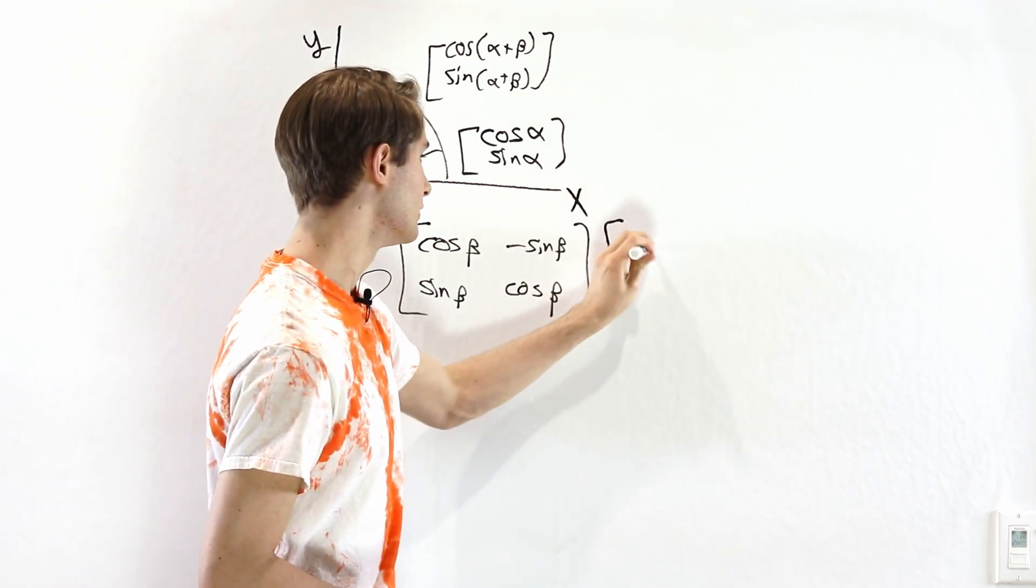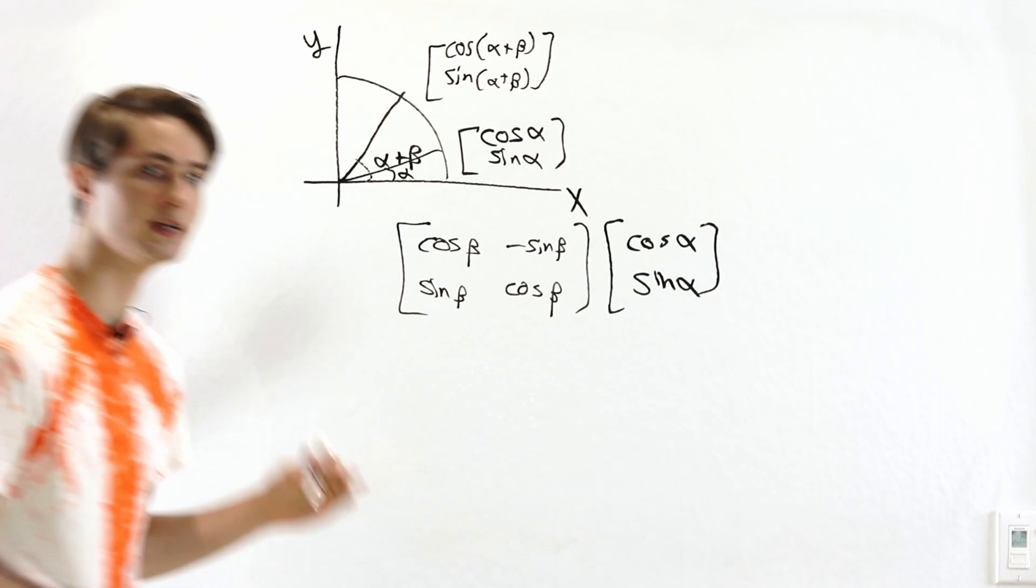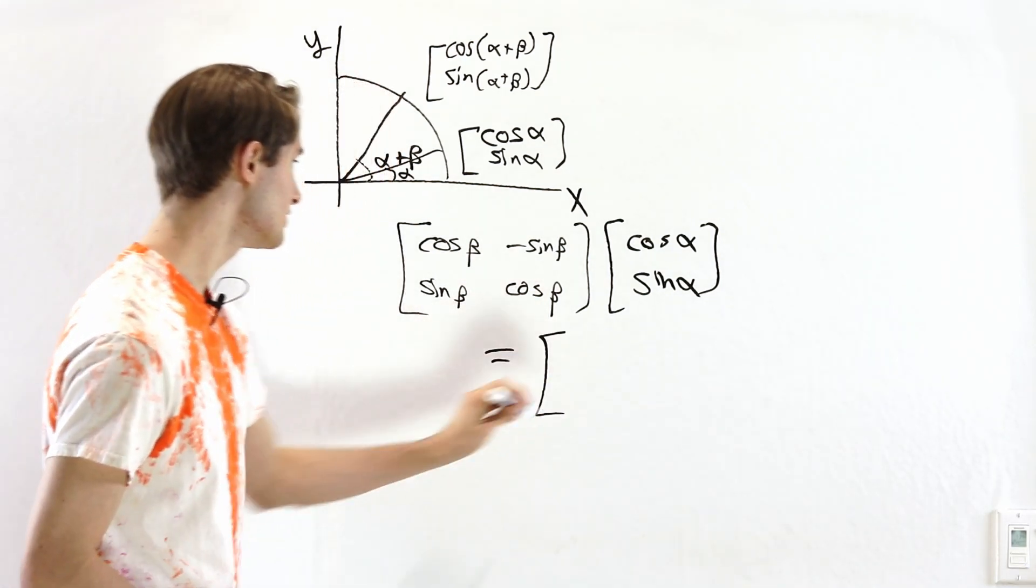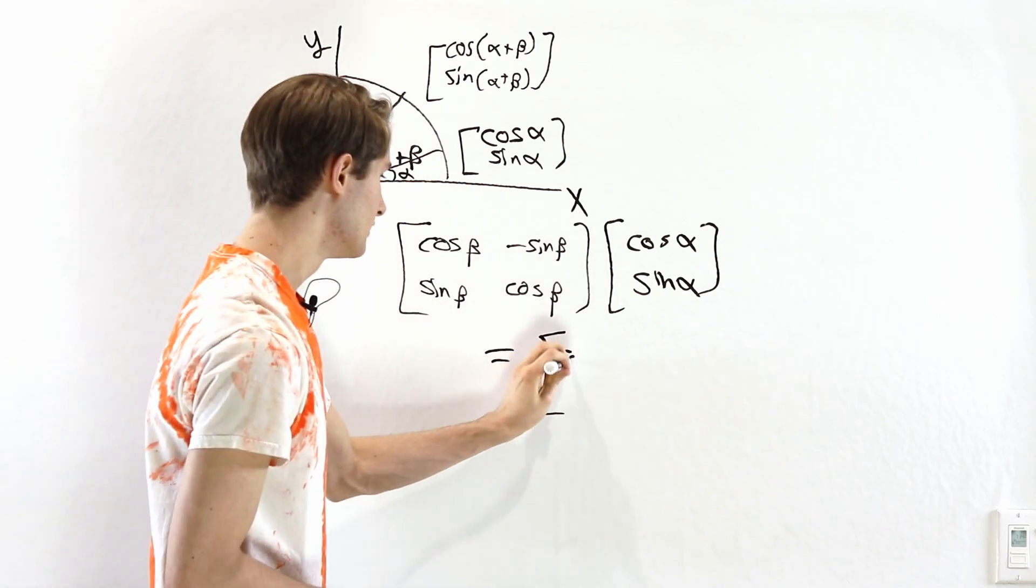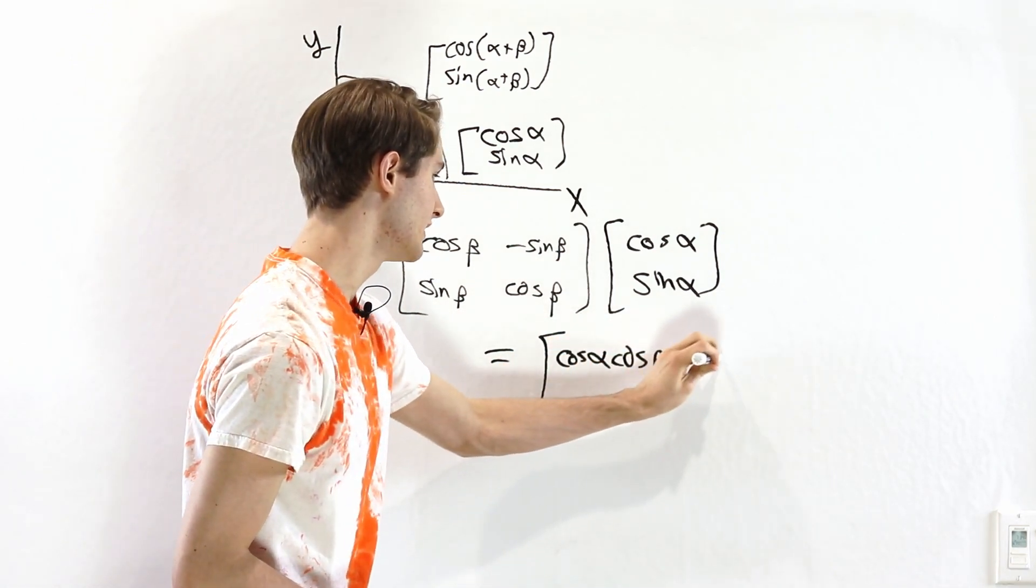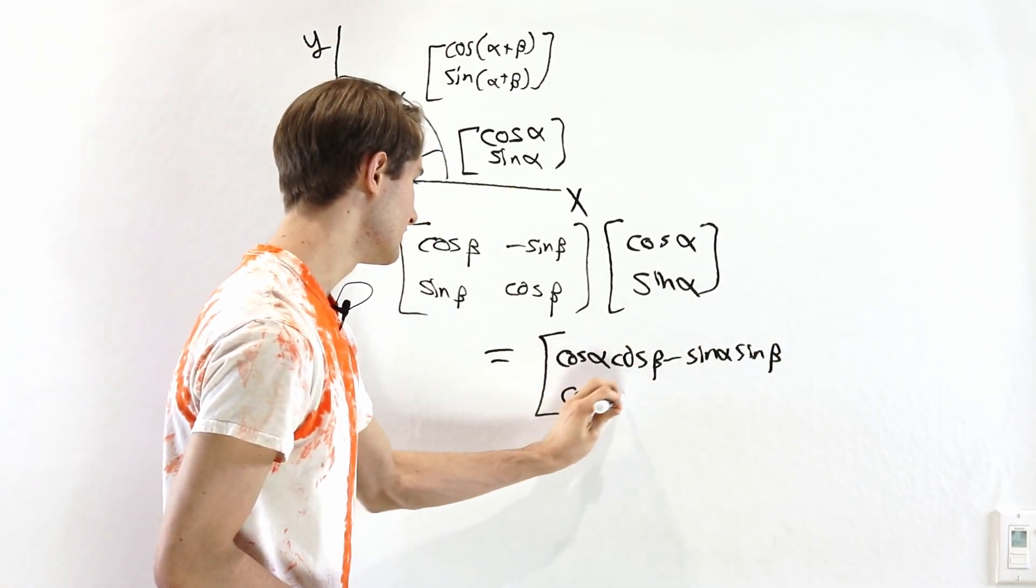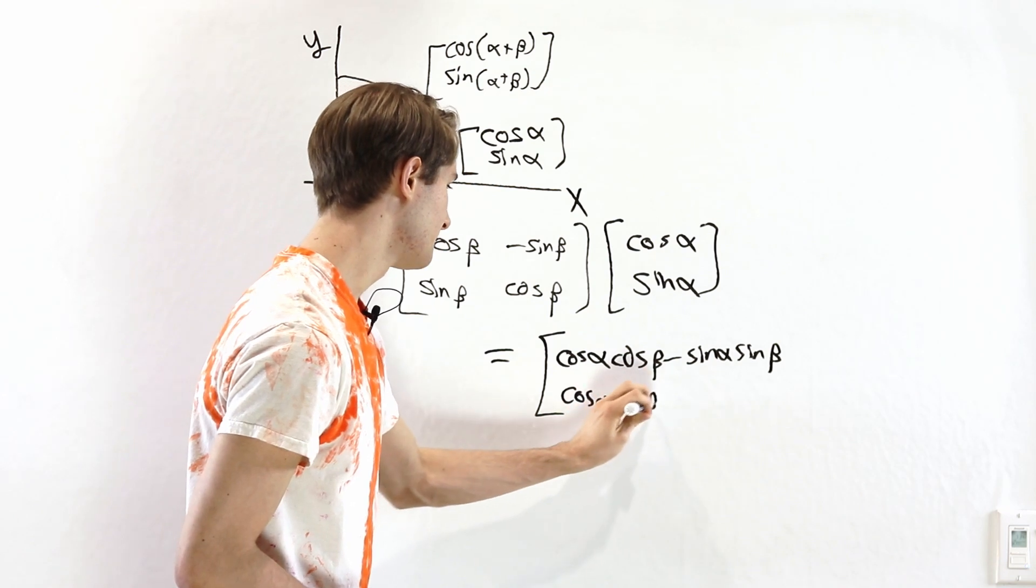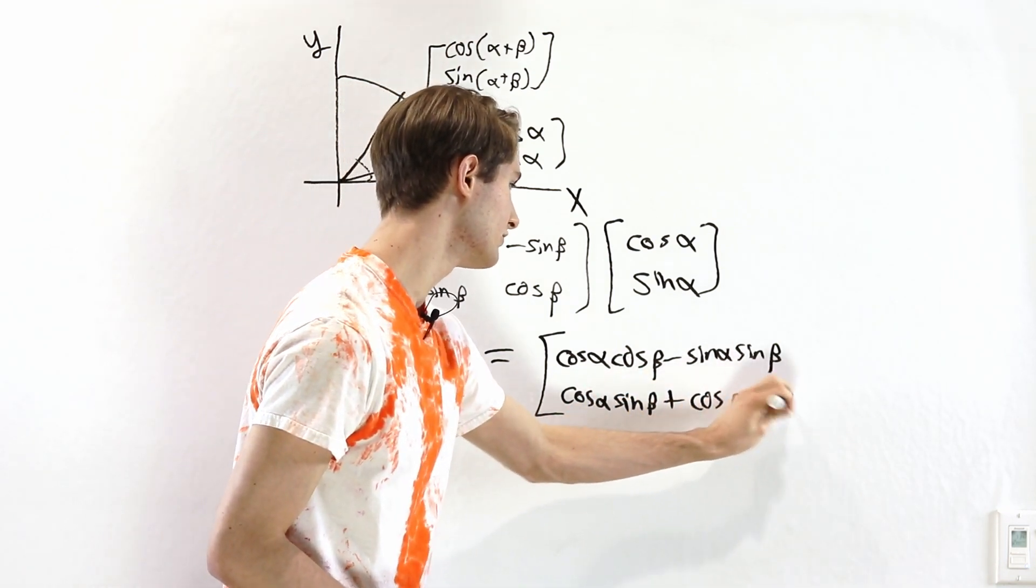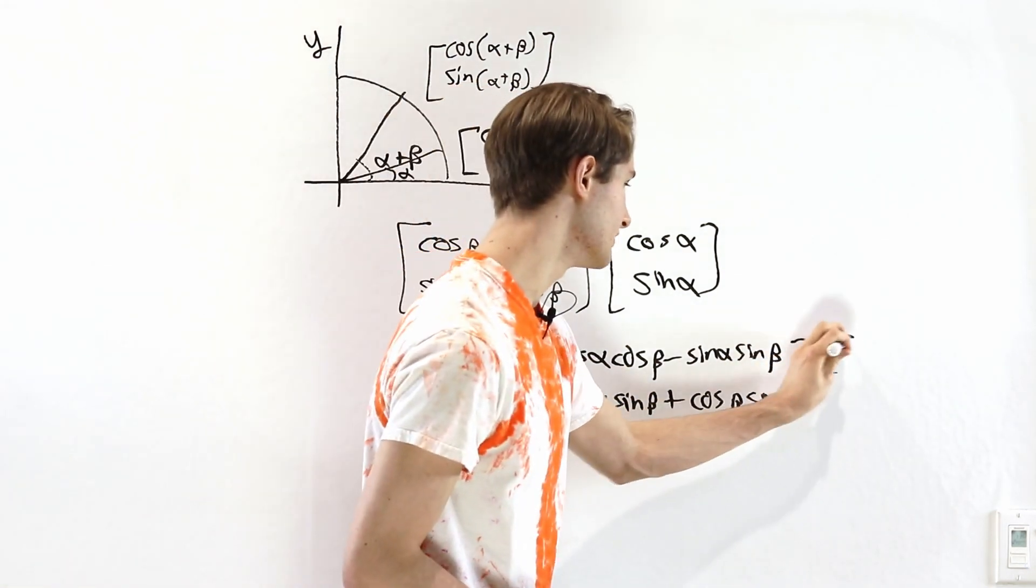So if we apply this to cosine alpha sine alpha, the total rotation will be alpha plus beta. So if we do this multiplication, what we're going to get is cosine alpha cosine beta minus sine alpha sine beta and then down here cosine alpha sine beta plus cosine beta sine alpha.